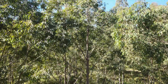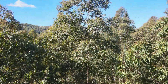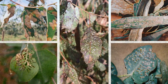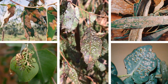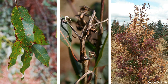To find these clues, start by examining the various parts of the tree. On the foliage of a tree, the symptoms of insect damage include blister, chewing, scale, etching or galls. Symptoms of diseases on leaves can be necrosis, which is dead or dying leaf tissue, tip distortion or wilt.